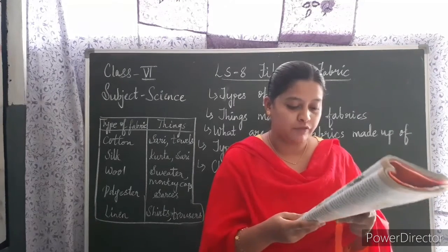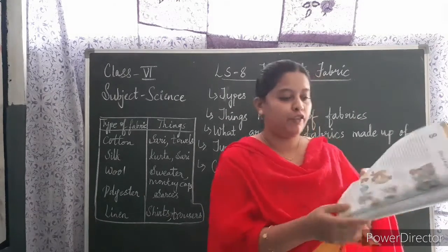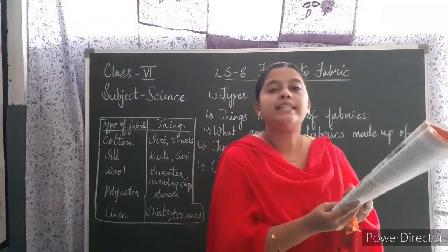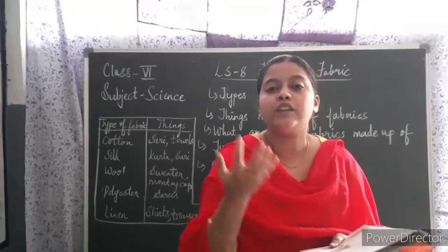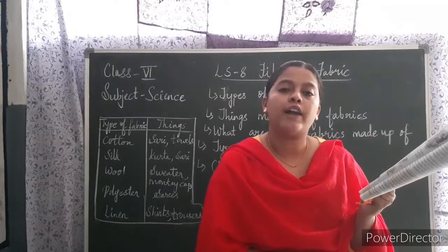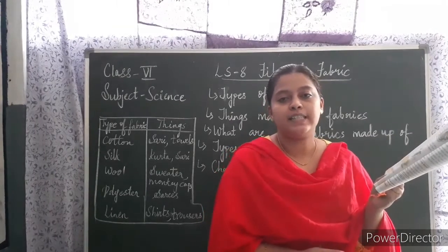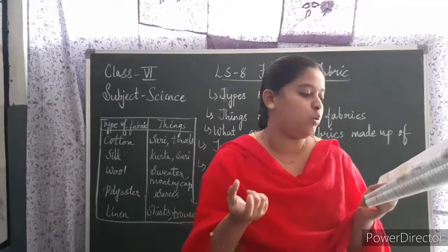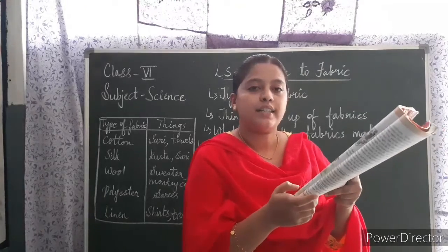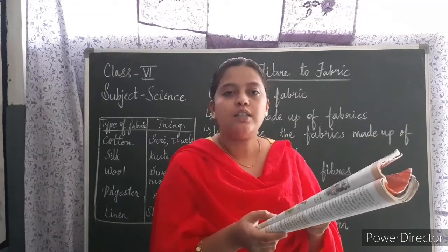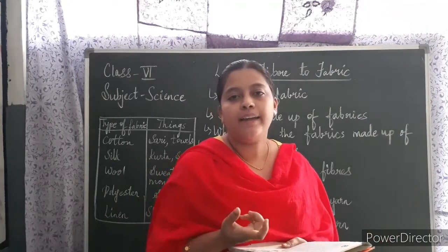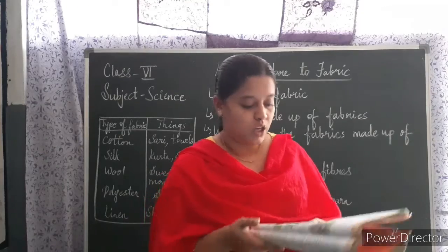In your textbook, figure number 2 on page number 7, there is a table where you must list types of clothes you wear in different seasons. In summer, you prefer light-colored cotton clothes. In winter, you wear woolen clothes. In the rainy season, you use umbrellas or wear rain coats.